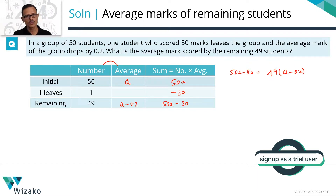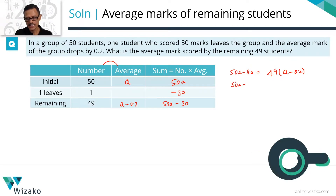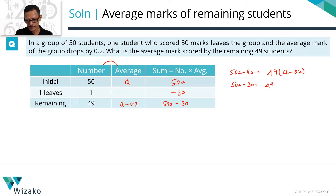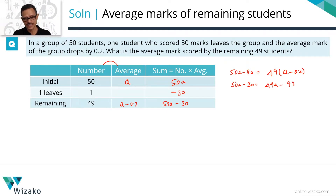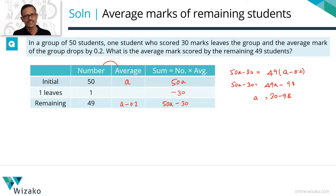We solve using sum equals number times average. The new sum is 50A minus 30, and that equals 49 times (A minus 0.2). Expanding: 50A minus 30 equals 49A minus 9.8. Taking all constants to one side: 50A minus 49A equals 30 minus 9.8. So A equals 20.2.